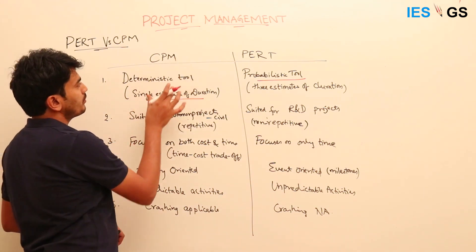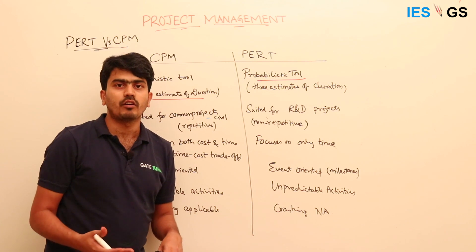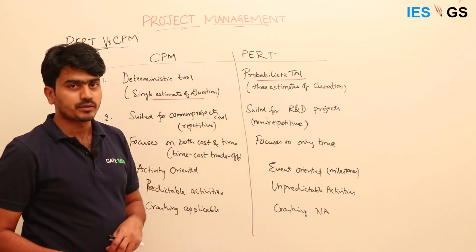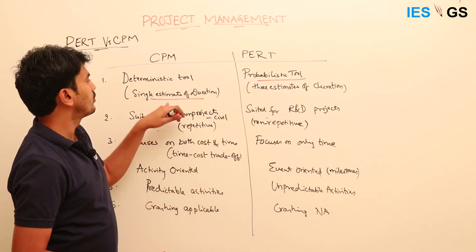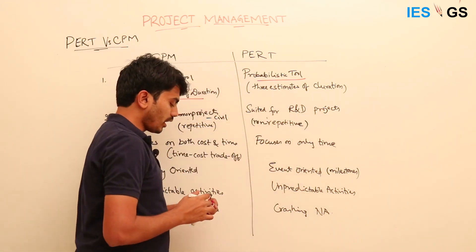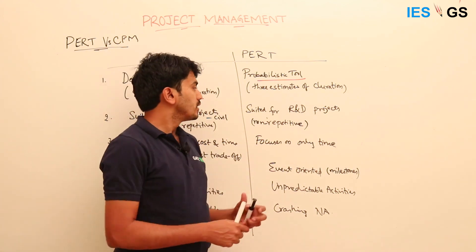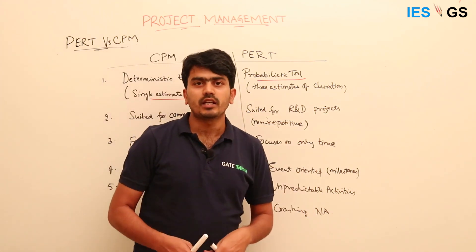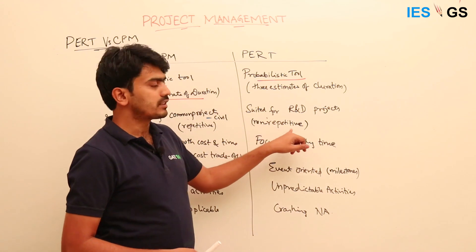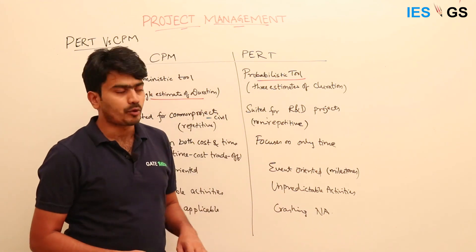CPM is suitable for common projects like civil projects, which are repetitive in nature — the same activities are done across various projects and their timings are known, consistent with its deterministic nature. PERT is used mainly for R&D projects; it was invented as part of R&D requirements. R&D projects are non-repetitive — every R&D project is different — so we don't know how much time a specific activity will take.